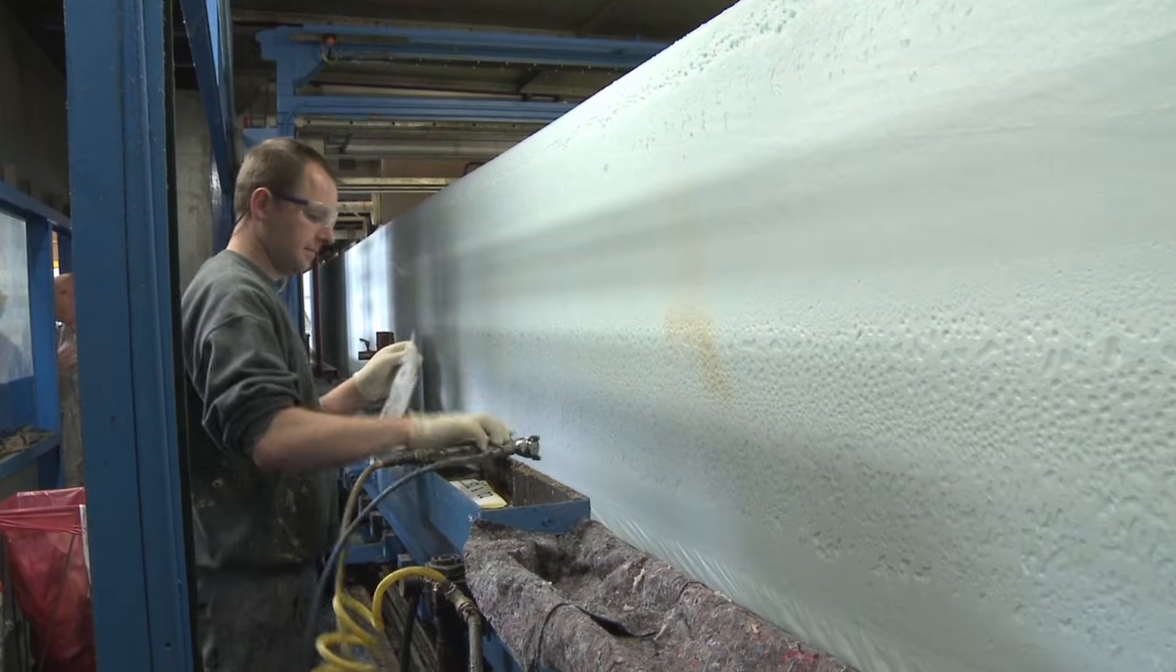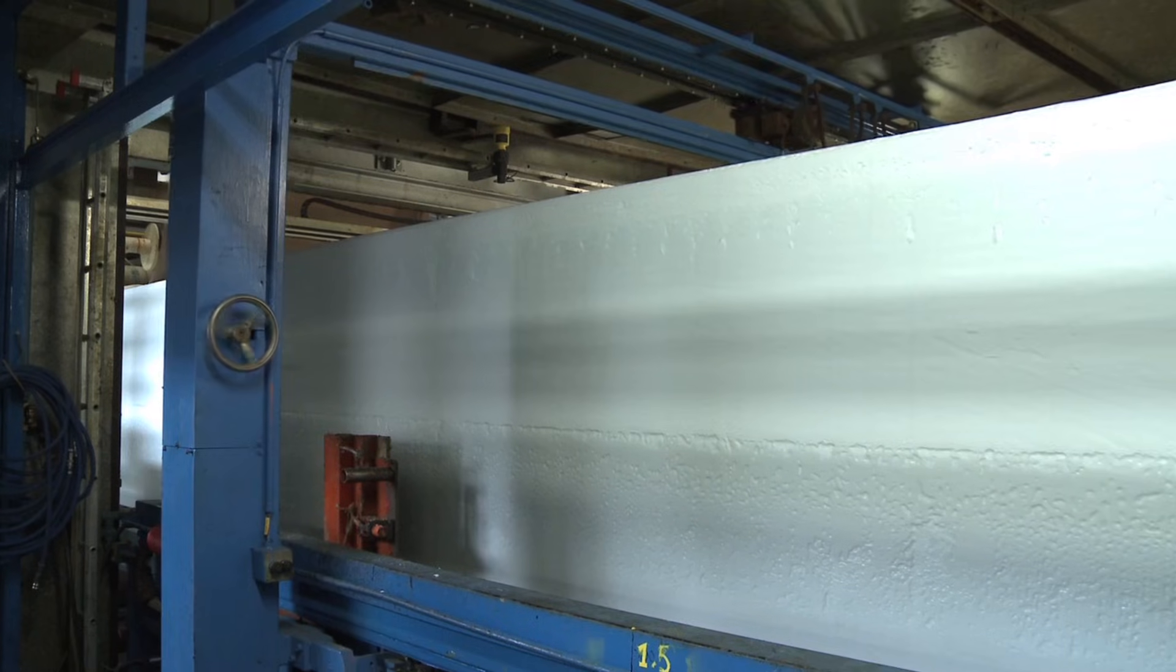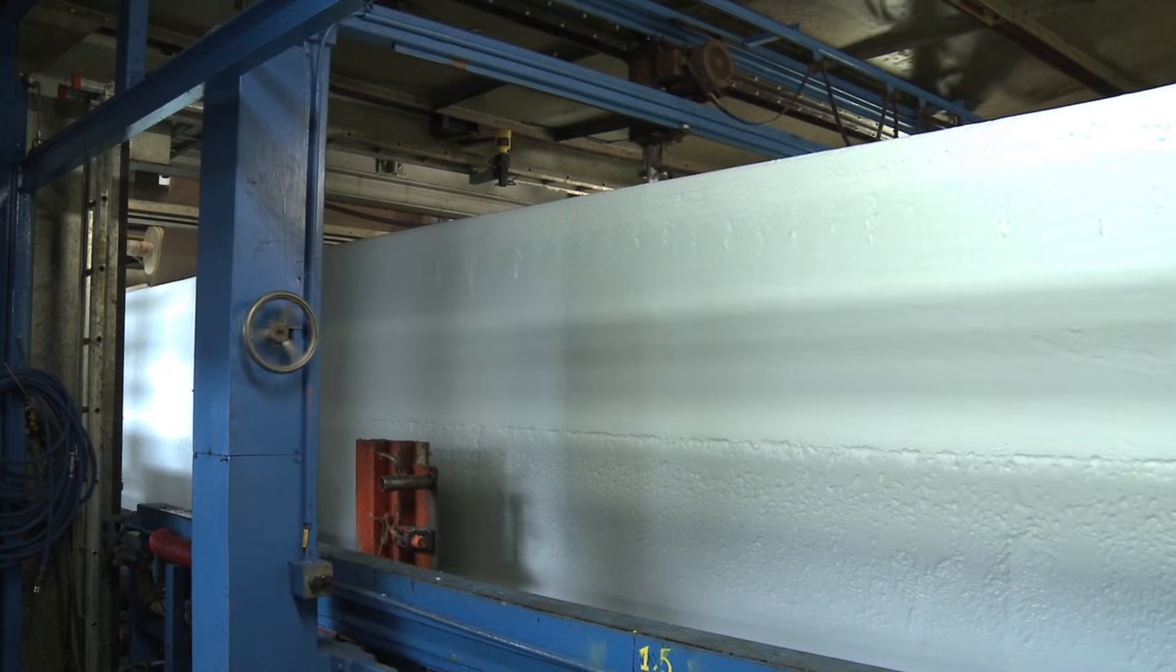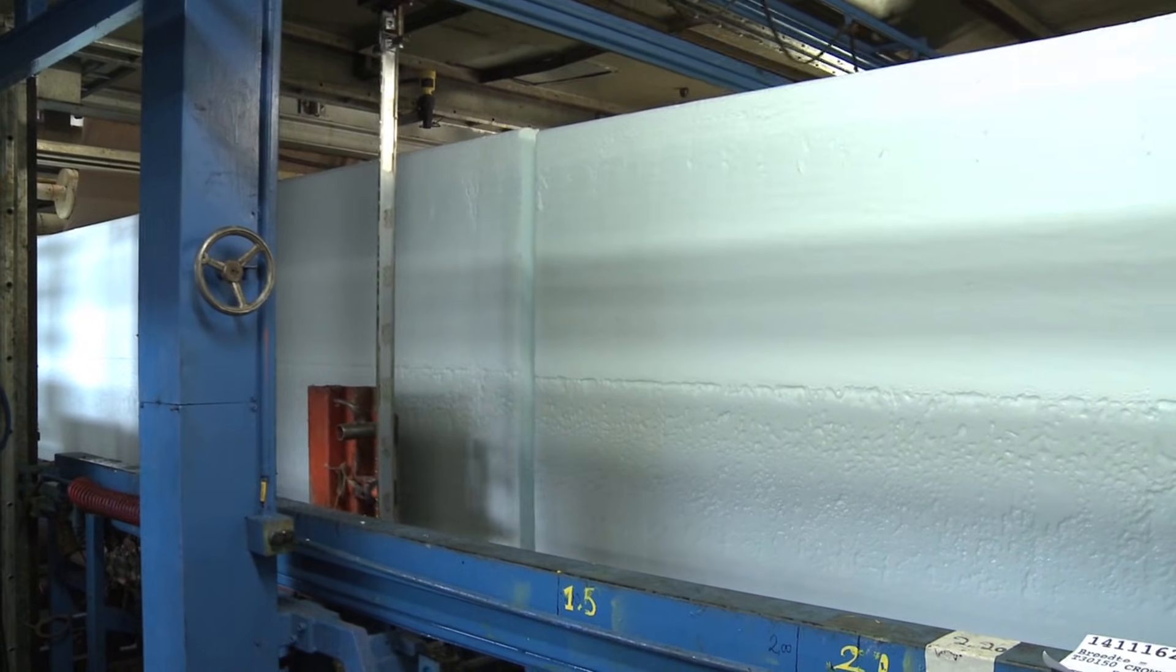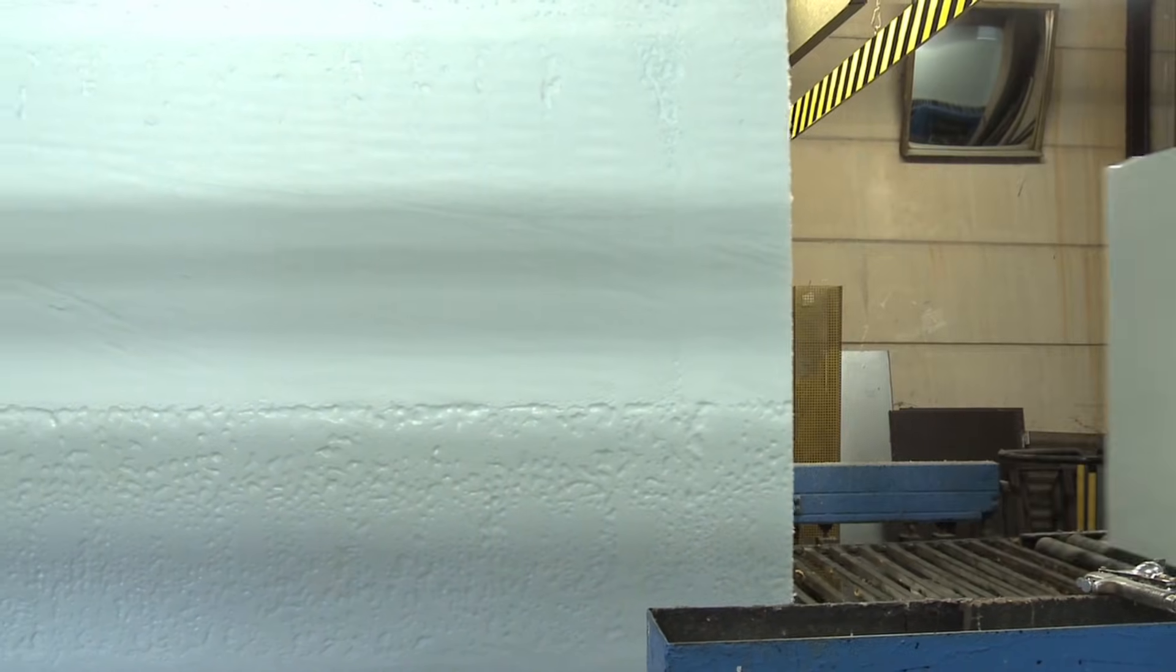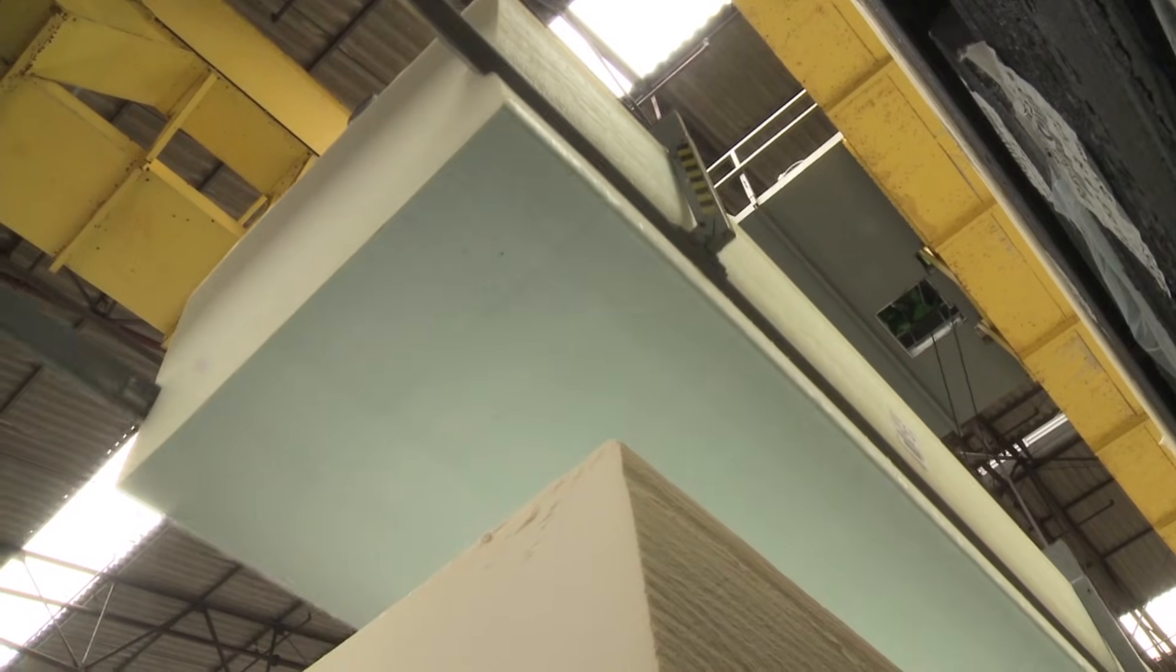And because the foam production is a continuous process, any foam block being produced on the conveyor belt could, in theory, be endless. However, to make the conversion of foam in later stages easier, the long continuous block is cut into sections of up to 120 metres in length.